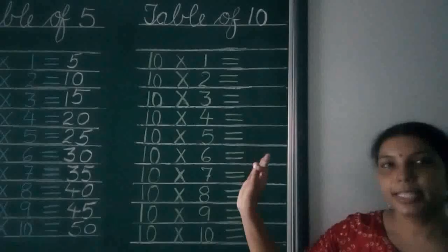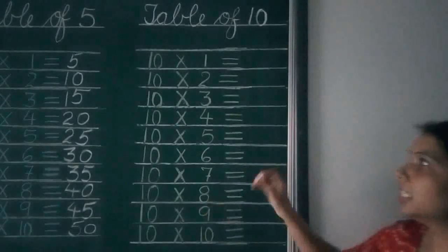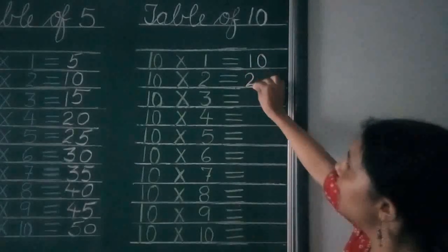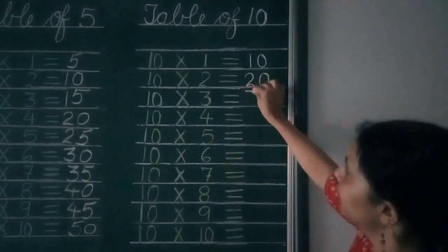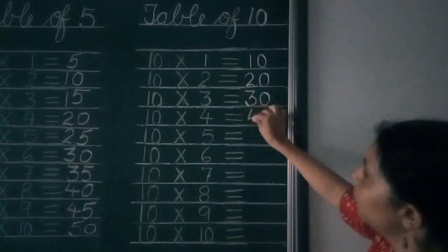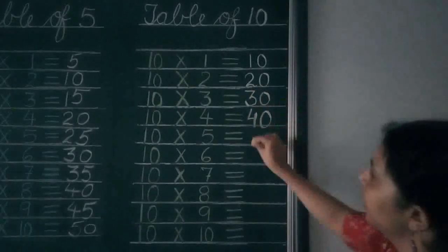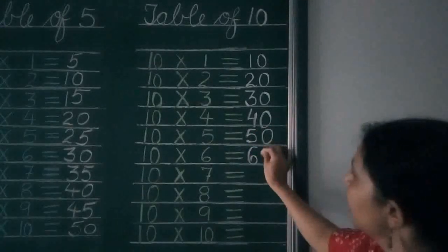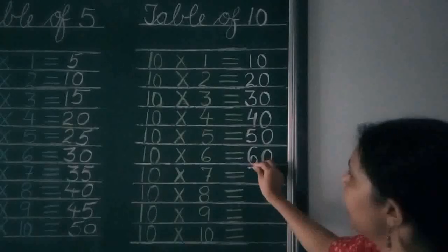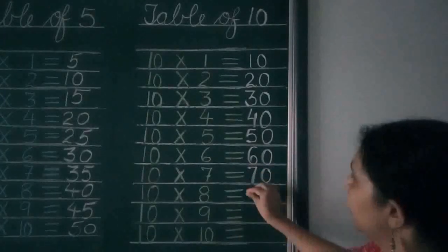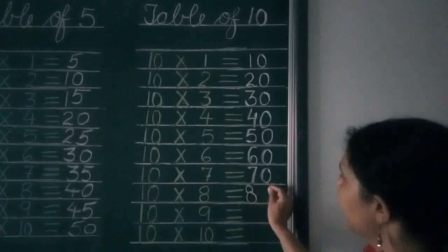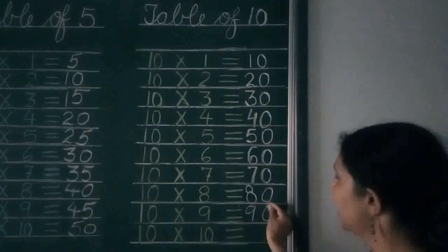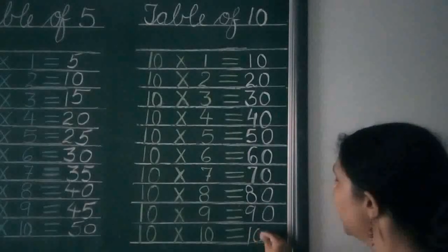Now this is the table of 10. Let's start. 10 1's are 10, 10 2's are 20, 10 3's are 30, 10 4's are 40, 10 5's are 50, 10 6's are 60, 10 7's are 70, 10 8's are 80, 10 9's are 90, and last is 10 10's are 100.